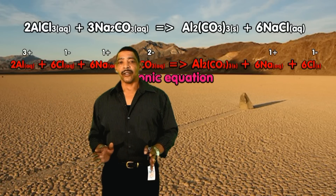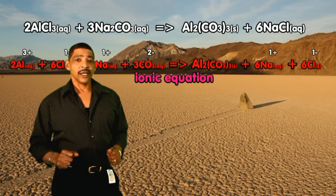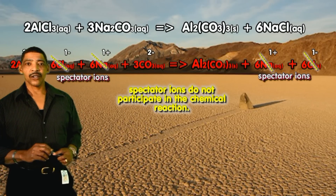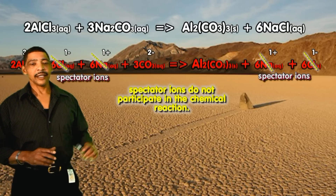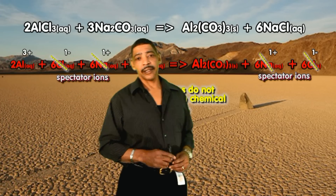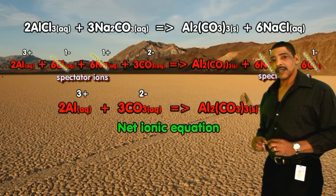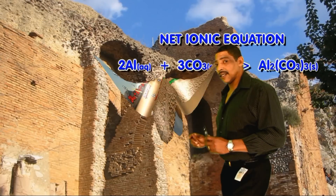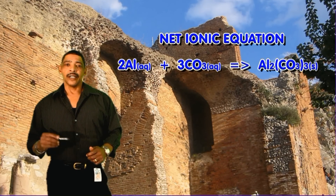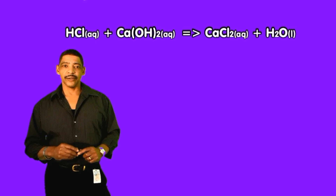The final step is to write the net ionic equation by eliminating the spectator ions. Spectator ions are those ions that appear on both sides of the arrow — in this case sodium and chloride both appear on the reactant side and the product side and may be eliminated. The net ionic equation for the process will be 2Al³⁺ plus 3 carbonate anions to yield the insoluble compound aluminum carbonate.